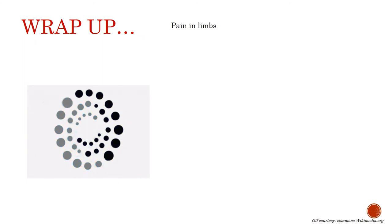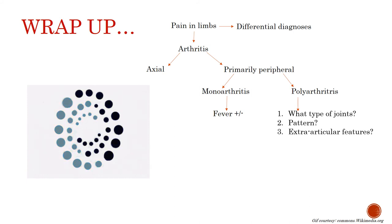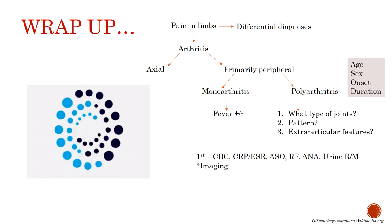To wrap up: a child presenting with pain in limbs — first rule out differential diagnoses. If it is arthritis, check whether it is axial or primarily peripheral. If peripheral, determine if it is monoarthritis (look for fever) or polyarthritis (ask: what type of joints — large or small; pattern of involvement — migratory, intermittent, or additive; and extra-articular features). Also consider age, sex, onset, and duration. Proceed with first-line investigations: CBC, CRP, ESR, ASO, rheumatoid factor, ANA, urine RM, and imaging if needed. Second-line investigations include detailed serology.